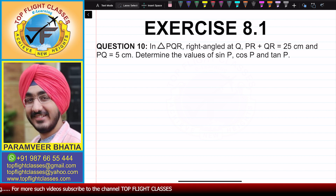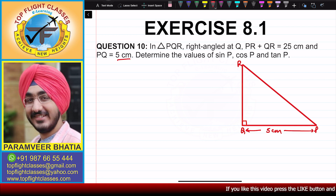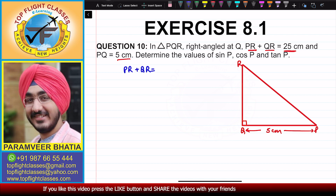In this case, we have a right-angled triangle. Let's draw it. We have triangle PQR, which is right-angled at Q. PQ is 5 cm, and the sum of the remaining sides PR and QR is given to us as 25 cm. So, PR plus QR is equal to 25 cm.